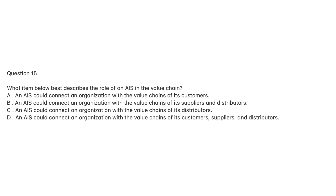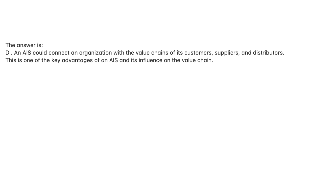Question 15. What item below best describes the role of an AIS in the value chain? A. An AIS could connect an organization with the value chains of its customers. B. An AIS could connect an organization with the value chains of its suppliers and distributors. C. An AIS could connect an organization with the value chains of its distributors. D. An AIS could connect an organization with the value chains of its customers, suppliers, and distributors. The answer is D. This is one of the key advantages of an AIS and its influence on the value chain.